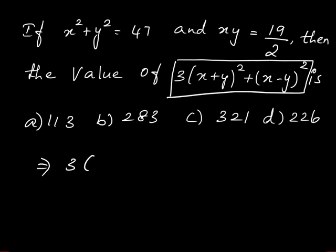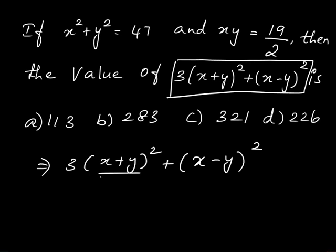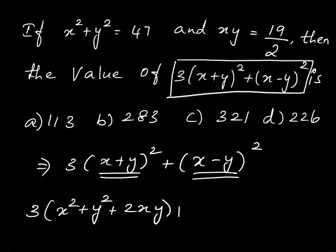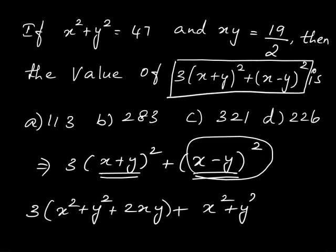Write 3 into x plus y the whole square plus x minus y the whole square. When you look at the identity it is similar to a plus b whole square and a minus b whole square, so just expand it. We get 3 and inside the bracket it's x squared plus y squared plus 2xy. And when you expand x minus y the whole square we get x squared plus y squared minus 2xy.